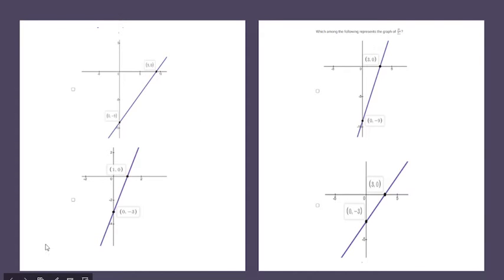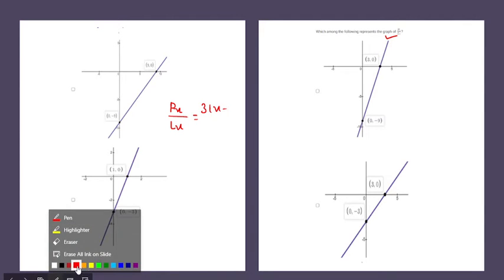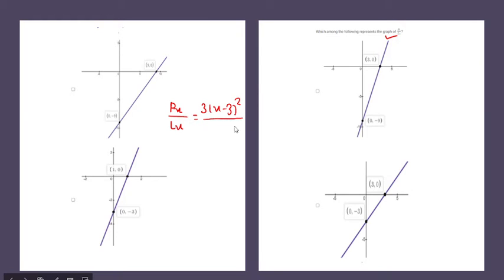Moving to the options, it is asking which graph represents p(x) divided by n(x). The parabola equation is 3(x minus 3) squared, and the line equation is 3(x minus 3). Dividing gives (x minus 3). So we have to find which graph represents y equals x minus 3. At y equals 0, x equals 3, so x-intercept is 3 and y-intercept is minus 3.